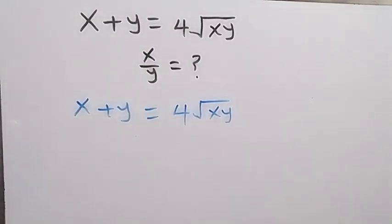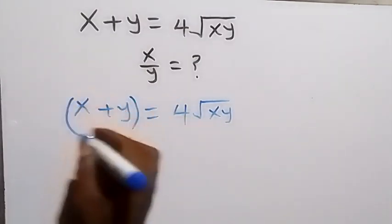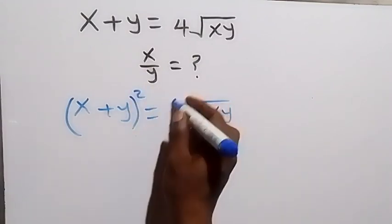From here, let's take the square on both sides. So we square this side and also we square this side.